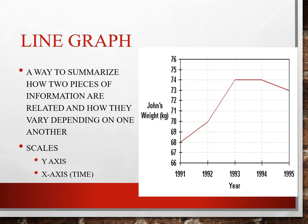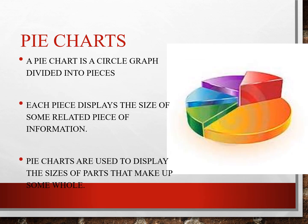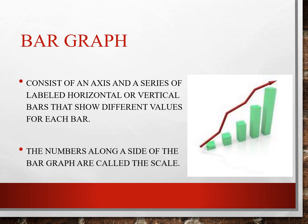Line graph: it's a way to summarize how two pieces of information are related and how they vary according to one another, with your y and x axis — usually x axis is over time. Pie charts: a pie chart is a circle graph divided into pieces, where each piece displays the size of some related piece of information. Pie charts are used to display the sizes of parts that make up the whole. Bar graph consists of an axis and a series of labeled horizontal or vertical bars showing different values; the numbers along the side are called the scale.